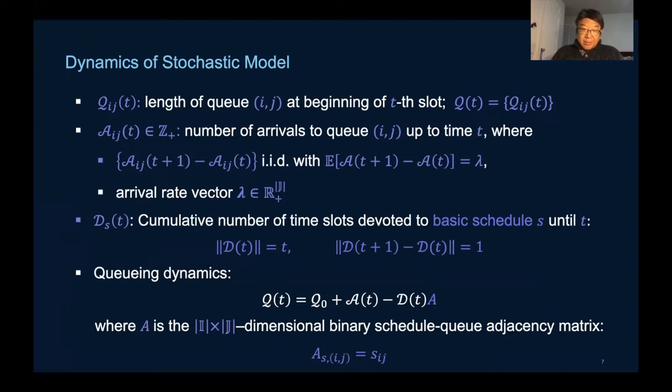Lambda is the arrival rate vector. The control or decision process D of t is the cumulative allocation to each basic schedule.